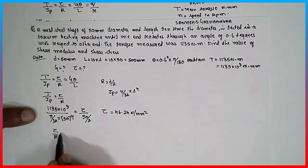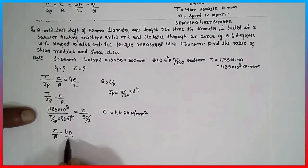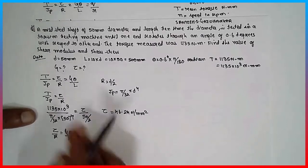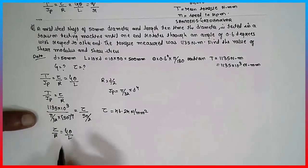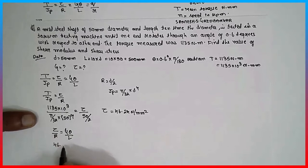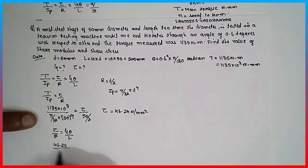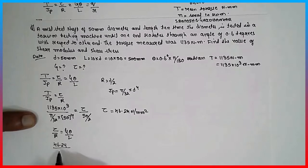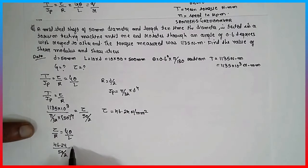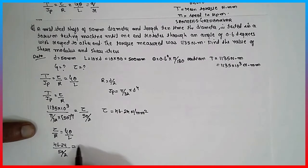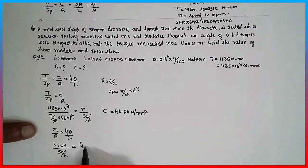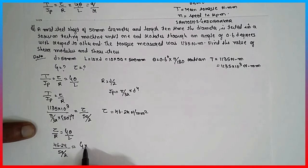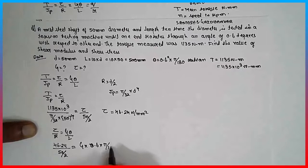Tau divided by R is equal to G theta by L, because we have to find out the shear modulus. 46.24 divided by 25 is equal to G into 0.6 into pi divided by 180.